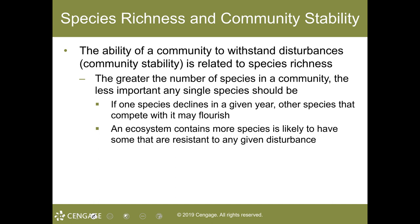Species richness is usually greater at the margins of distinct communities than in their centers. An ecotone — a transition zone between two communities — contains all or most of the ecological niches of adjacent communities, as well as some that are unique to that ecotone. This change in species composition at the ecotone is known as the edge effect.